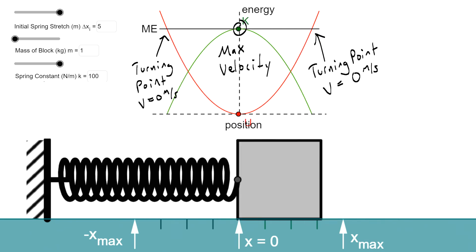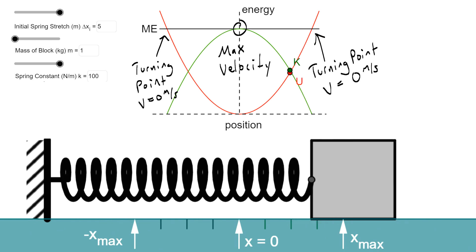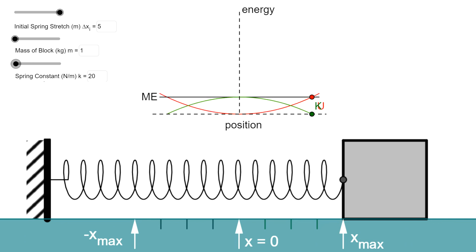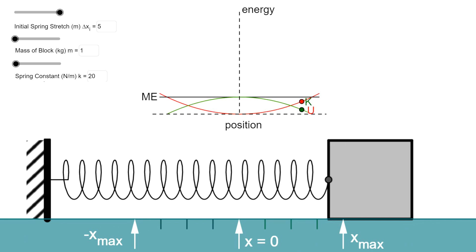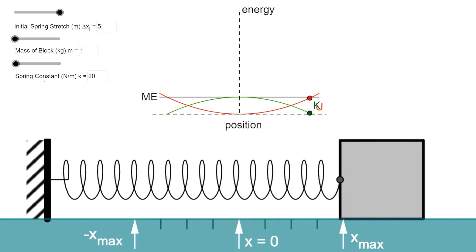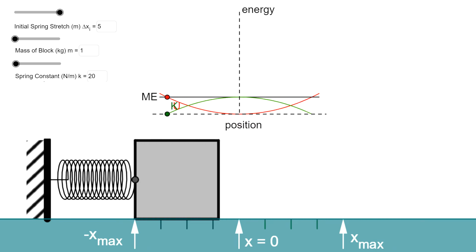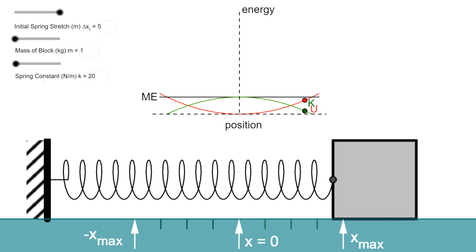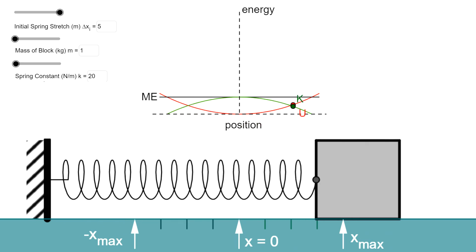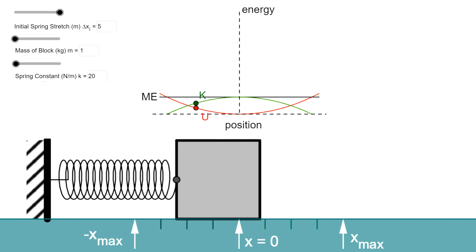So this is how the potential energy function looks for this type of a system. We can change certain things. Like if we lower the spring constant, we're lowering the total energy that's stored in the spring, and you can see that the kinetic energy transfer is a little bit slower. You still have the same features. You have turning points where the velocity is zero, and the maximum velocity is in the middle where the potential energy is going to be zero.